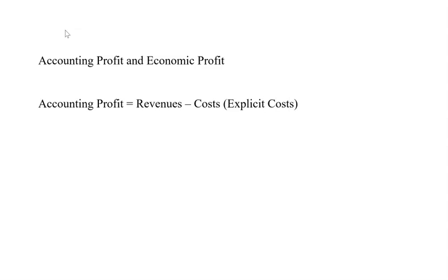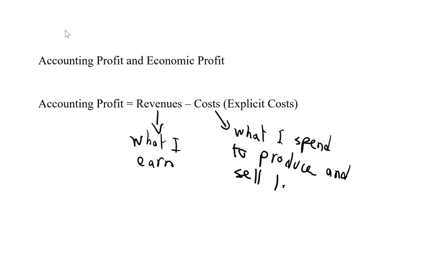So let's say I have a coffee shop and I'm producing just one product, which is latte. Revenue is basically what I earn, how much money am I bringing in. And cost here, explicit cost, is basically telling us what I spend to produce and sell lattes.